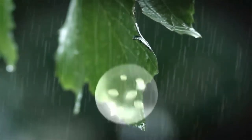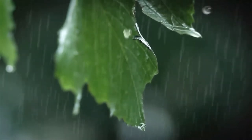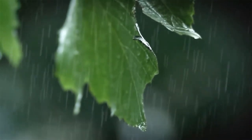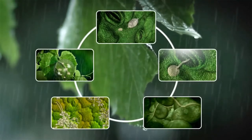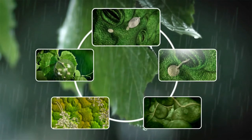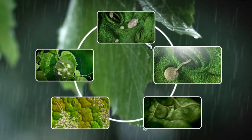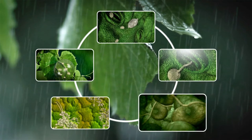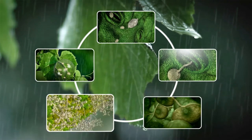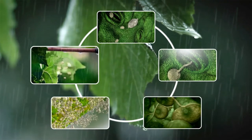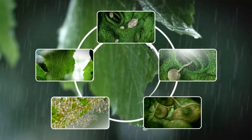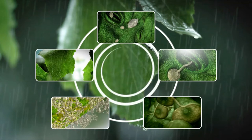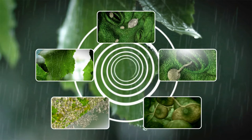Gusts of wind and, above all, splashes of rain spread the sporangia to other leaves. Here, the cycle of zoospore release, infection of the host plant, mycelium formation in the leaf, mass production of sporangia, and sporangial dissemination can continue repeating, especially in wet weather. The infection pressure increases.